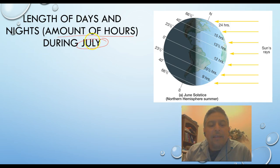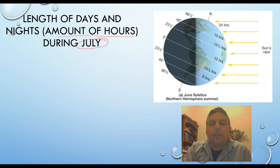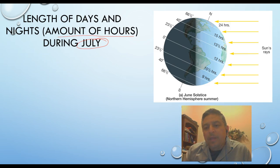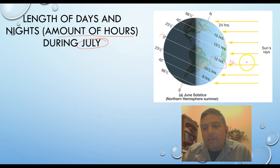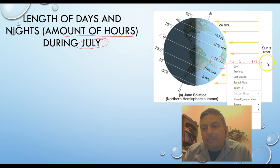Now this is July — you'd think it's going to be summertime for us. Let's take a look at what happens during summer. Notice the amount of hours over here as you get close to the equator, which is zero right here. This is when everything is going to be balanced — that means 12 hours of daytime and 12 hours of nighttime.